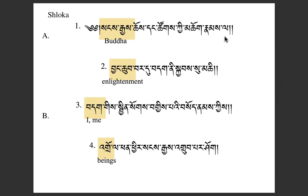Now I'll read it out loud. Sang-ge-che-dong-sok-ki-chok-nam-la. The line in Tibetan poetry will end with two chaise — the vertical stroke. Two chaise indicates to us that it's poetry here.